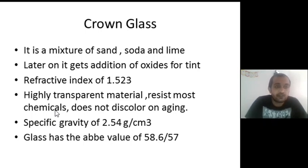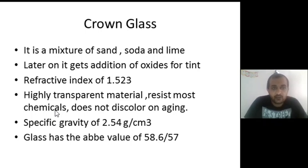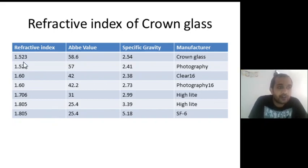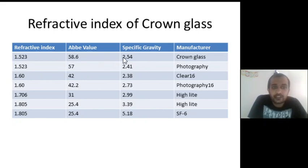These are the features for the crown glass lenses. A very important good feature is that it is highly transparent, resists most chemicals, and does not discolor on aging. It is basically made of sand, soda, and lime. The 1.523 refractive index has an Abbe value of 58.6, a specific gravity of 2.54, and the manufacturer is Crown Glass.